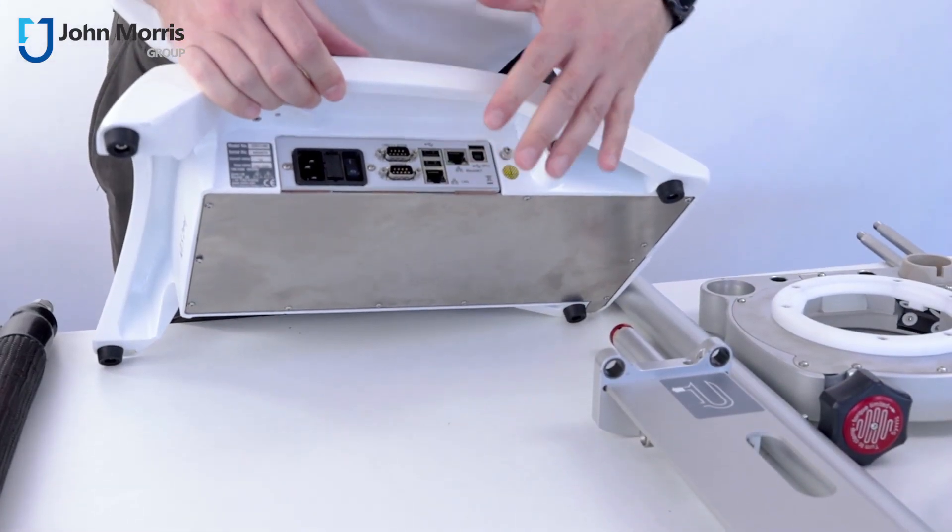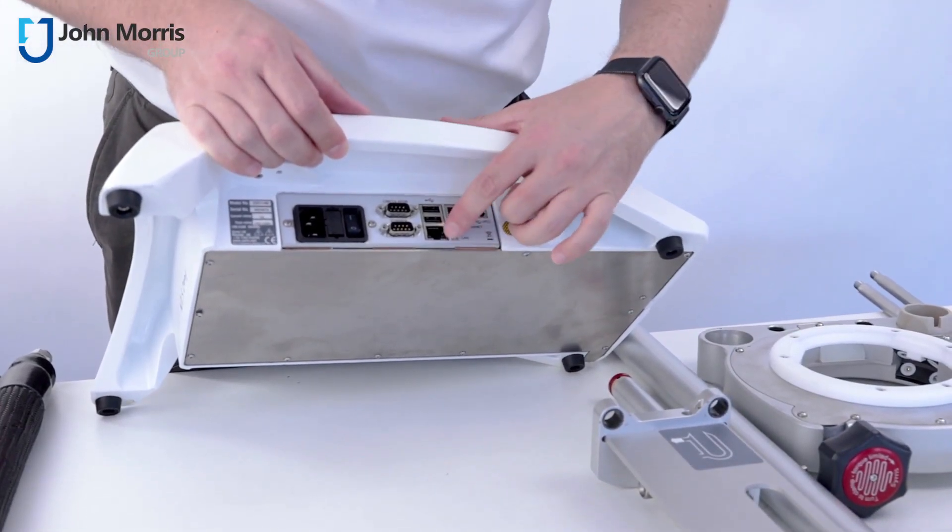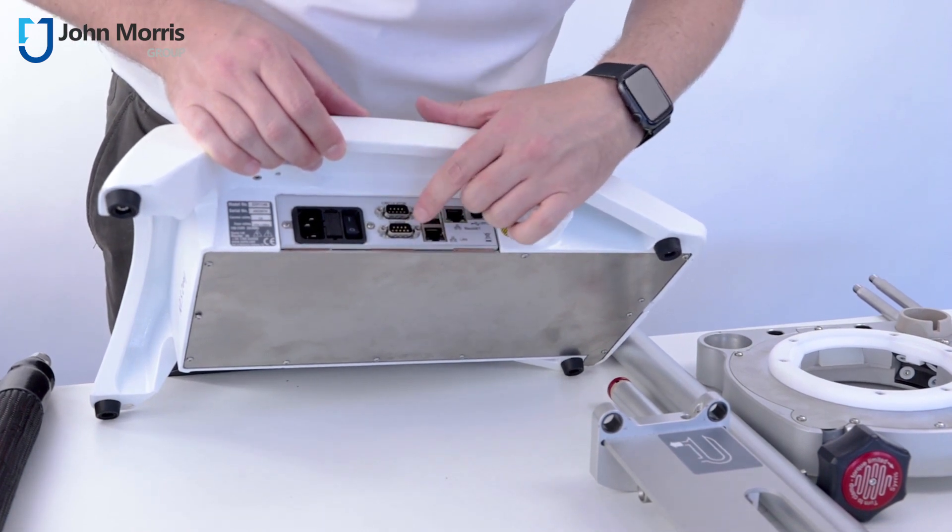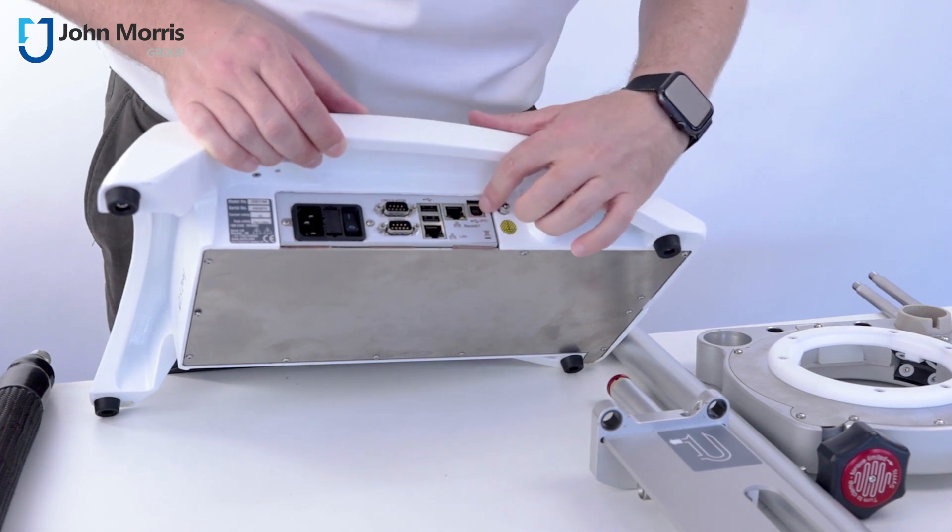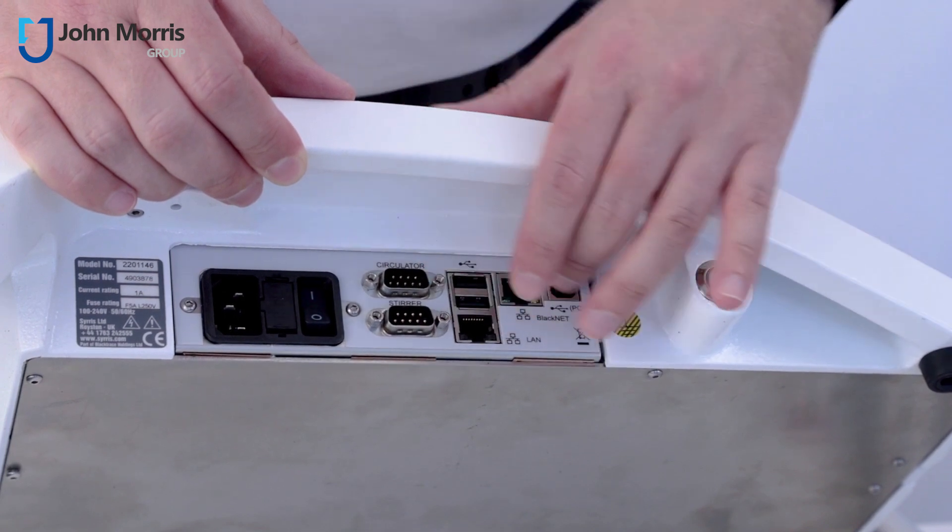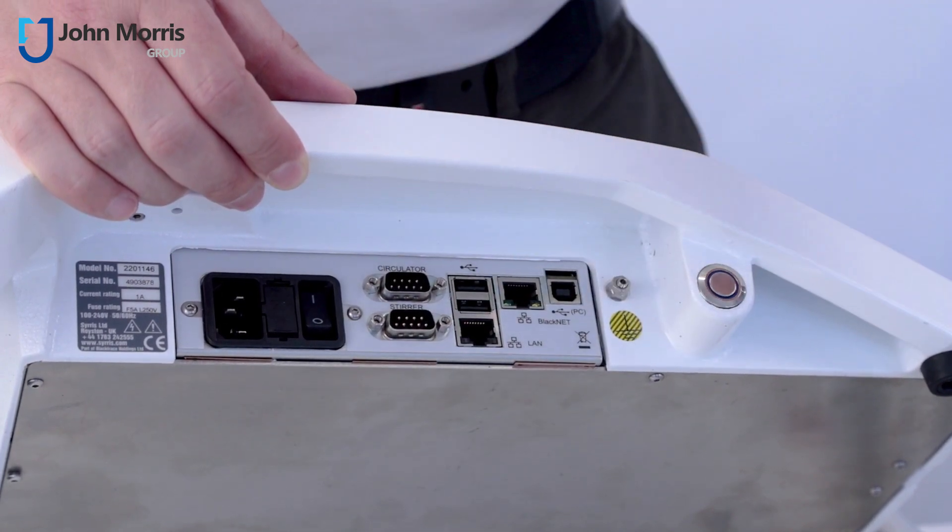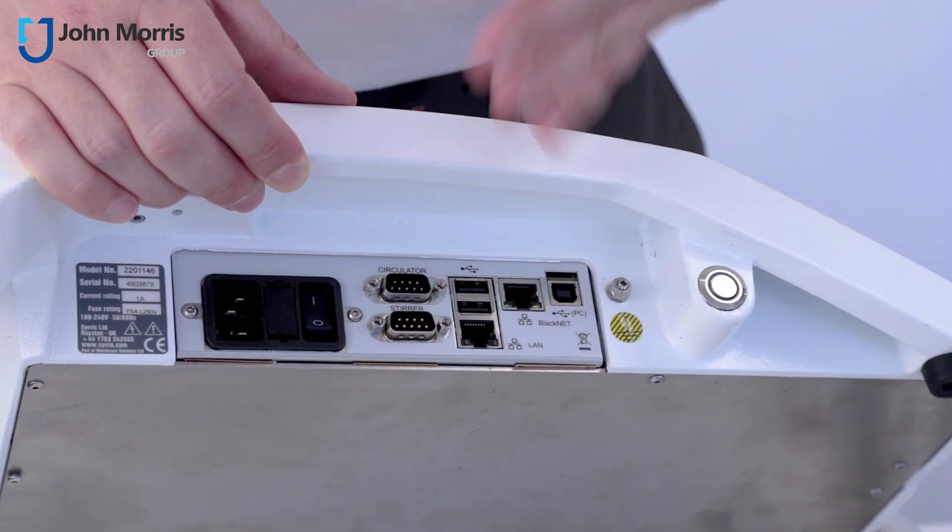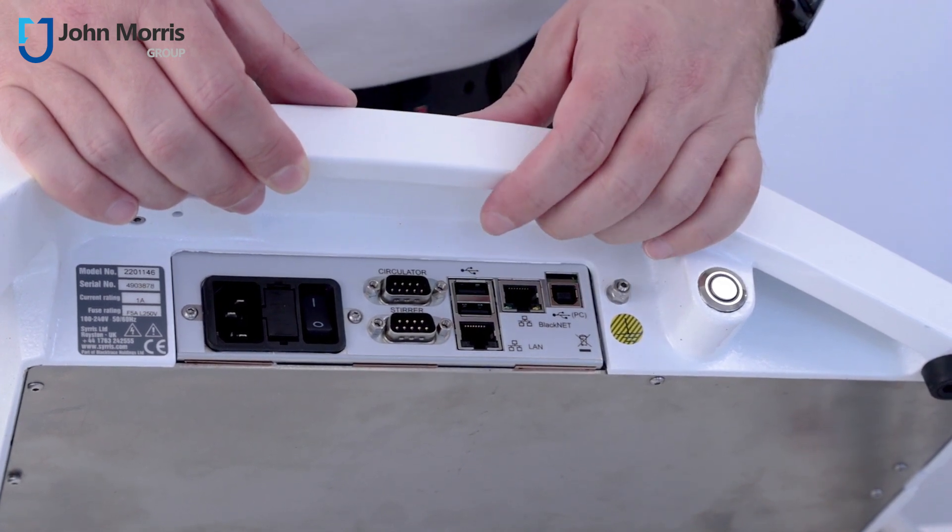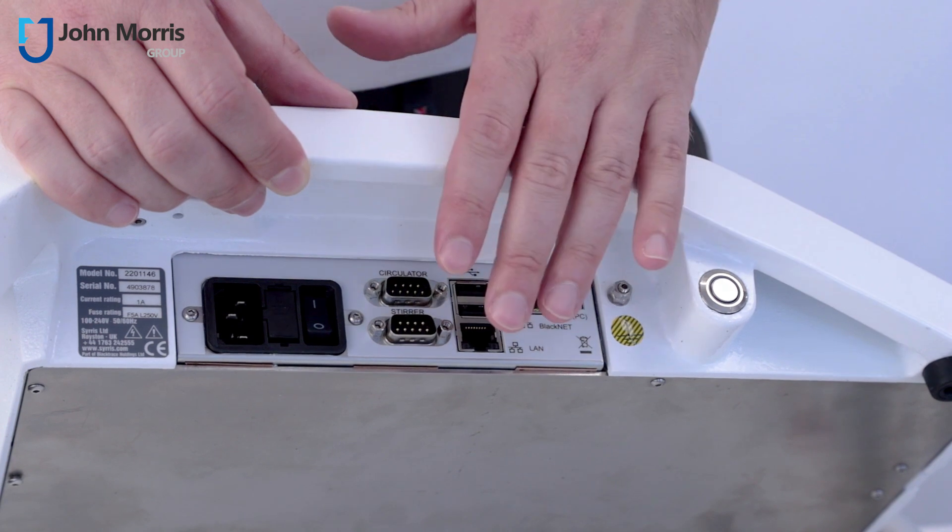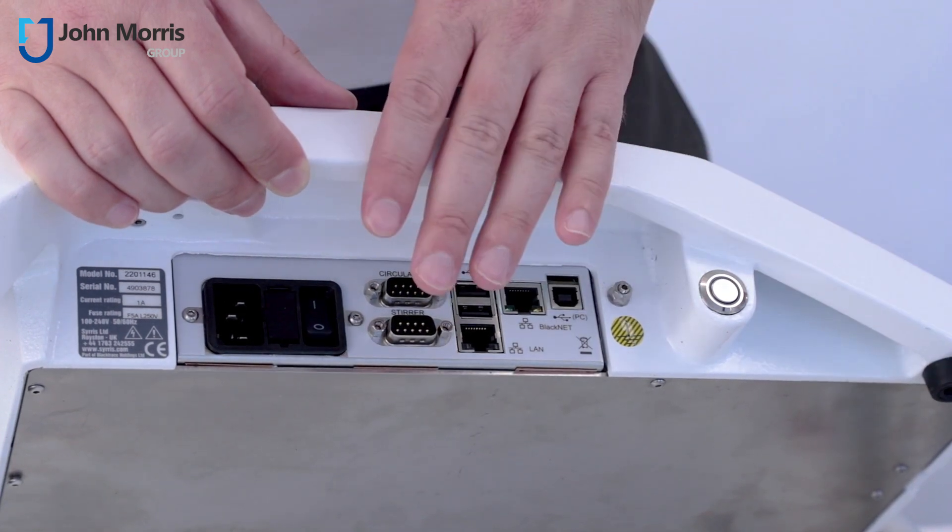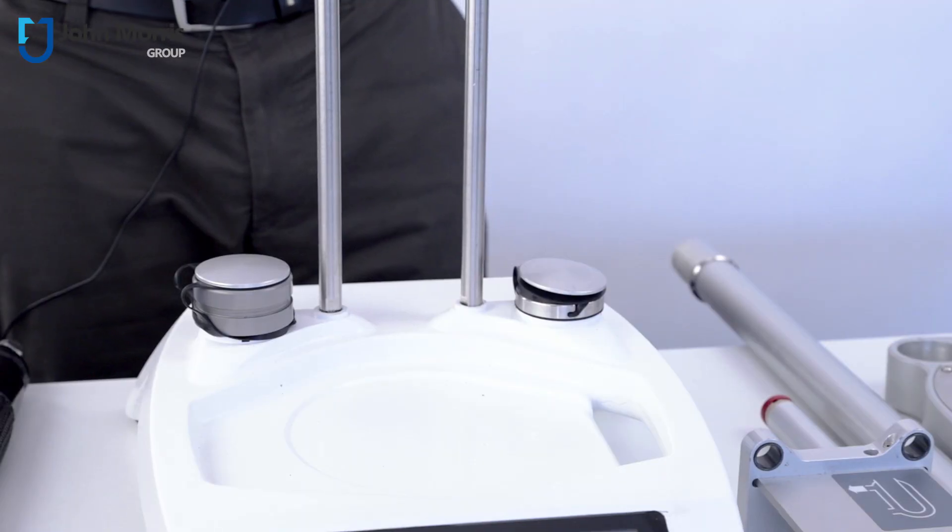So inside the Atlas HD is a full-blown computer and it offers you a range of different opportunities for connecting this computer to your network. You can see you've got LAN, you can see you've got serial interfaces, you can see you've got USB connections, and you can even automate other devices using the Atlas HD or by connecting this to a computer and having that automate other devices. So let's put it together.